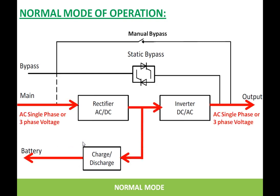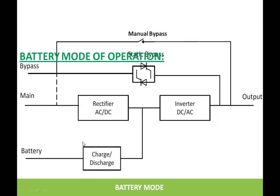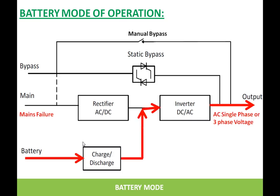The other mode is the battery mode. The UPS goes to this battery mode when incoming power fails. When incoming power fails, the battery bank is used for providing the required output that is fed to the inverter. The inverter converts the DC of the battery bank to AC and feeds it to the output.